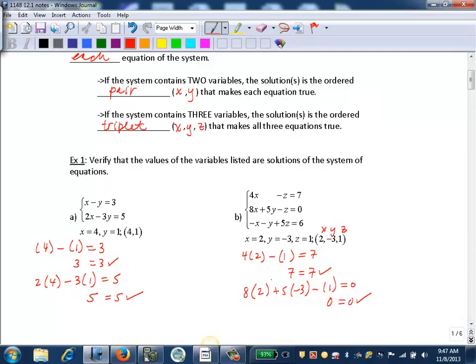And then finally, the third equation. Our negative x minus y plus 5z equals 6. I'll fill in. So I want negative, put the 2 in for the x, minus, put the negative 3 in for the y, plus 5 times 1 for the z. And that equals 6.